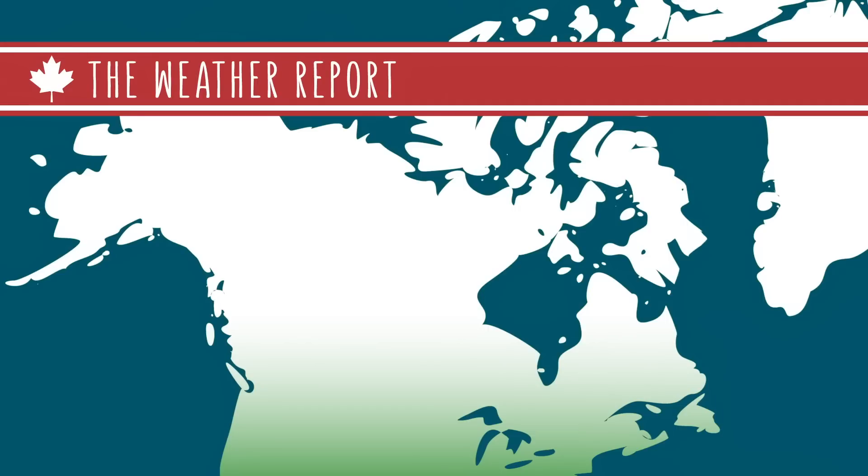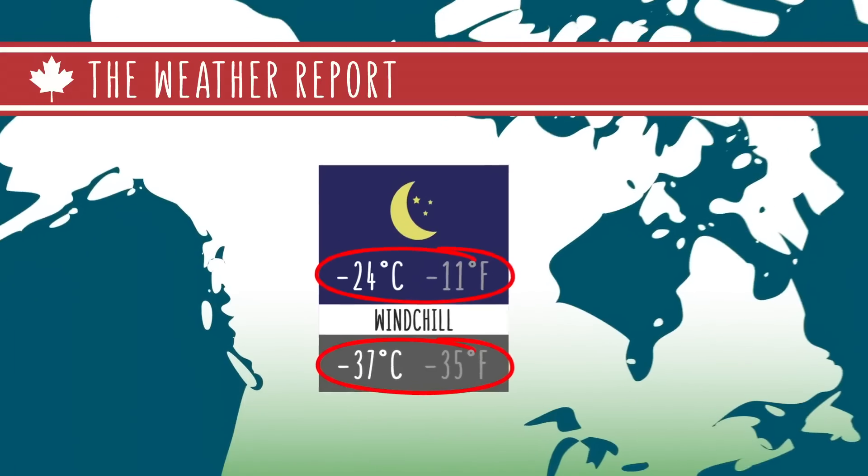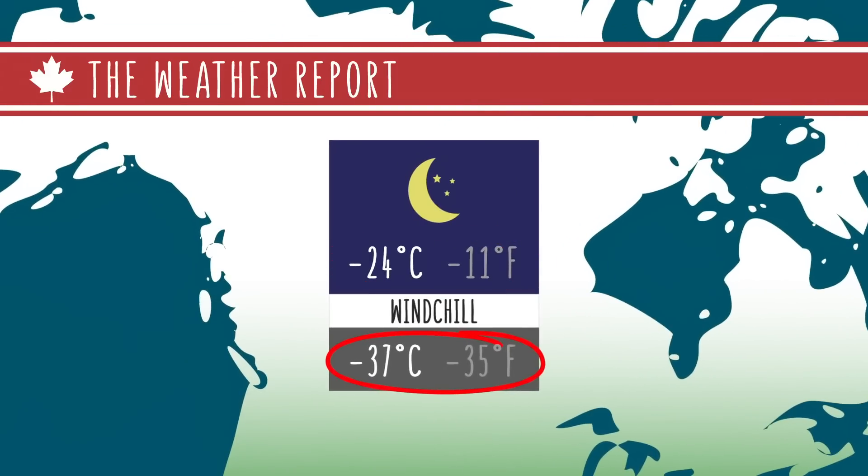Usually they say something like, the overnight forecast will be clear with a low of minus 24 and a windchill of minus 37. But what does that actually mean? And why are there two temperatures? Well, believe it or not, despite appearances, the windchill is not a temperature. It's actually just a way of communicating the perceived temperature.